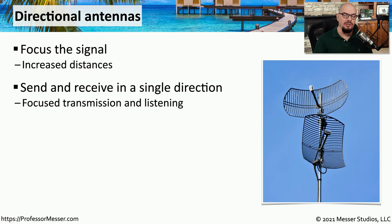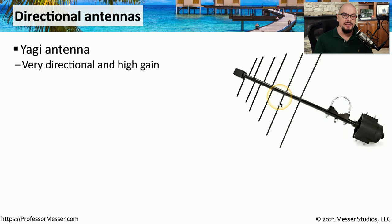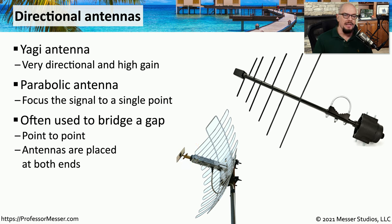For example, if you want to extend a wireless signal between buildings, you may want to use directional antennas. Looking at antenna specifications, you may find an increase in gain — for example, increasing gain by 3 dB effectively doubles the power of that transmission. If you want to increase signal strength between sites, you might use a Yagi antenna, which is very directional and adds quite a bit of gain. You might also consider a parabolic antenna, where all signal is focused to a single feed horn at the front. These are often used to bridge longer distances, and you simply place one at each end for a high-gain, very directional 802.11 connection.